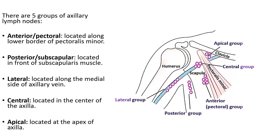The apical group is located at the apex of the axilla. Remember the cervico-axillary canal: anteriorly you have the clavicle, medially the first rib, and posteriorly the upper border of the scapula — that is where the apex of the axilla lies.